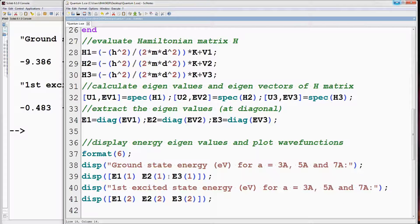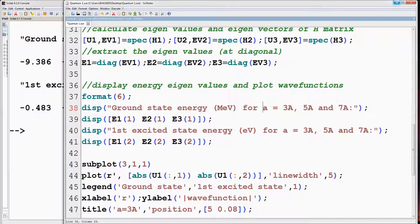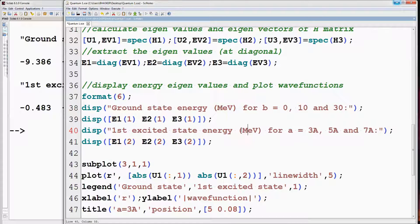Change the display statement. Now energy will be in MeV. Instead of A as 3, 5 and 7, we have B as 0, 10 and 30.